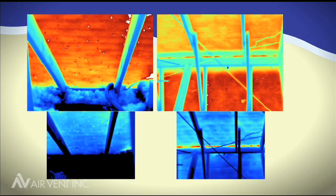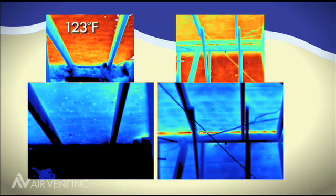In the unbalanced attic, temperatures reached 123 degrees. After a balanced system of ventilation was installed, that same attic dropped to 113 degrees.